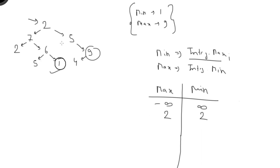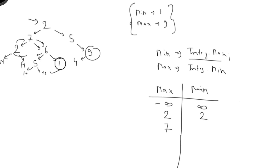Now let's trace through the example. We start at node 7 — check if 7 is greater than max: yes, update max. Check if 7 is less than min: yes, update min. Then we go left to the child node; check if that value is greater than max: yes, update max. Check if less than min: no. We continue left again, check the node — neither condition triggers, both values remain. Its left and right children are null, so nothing happens and we return. Going right to node 5, neither condition triggers, children are null, we return.